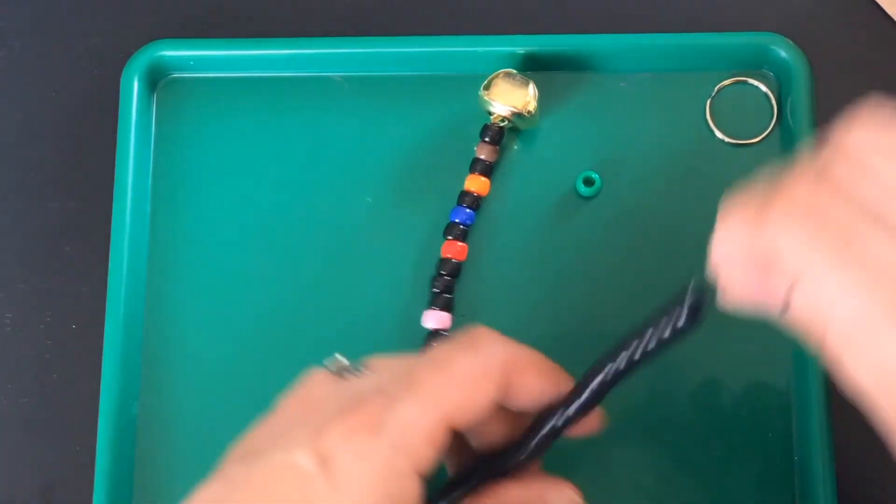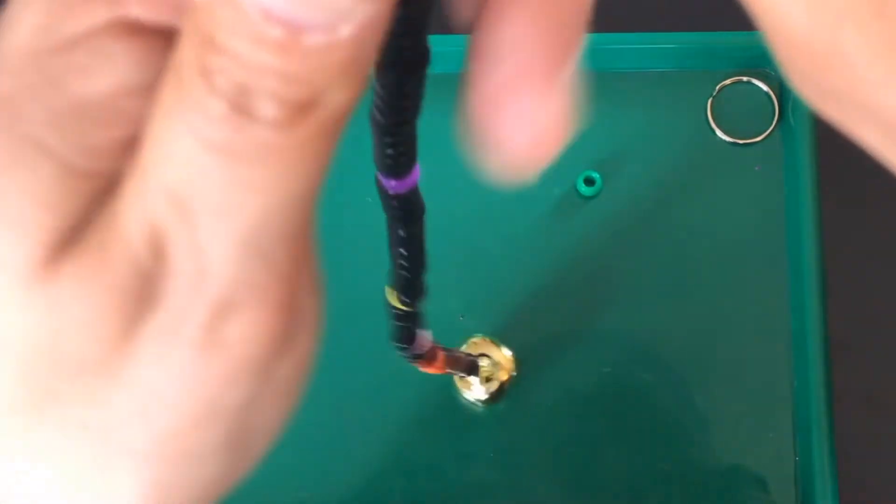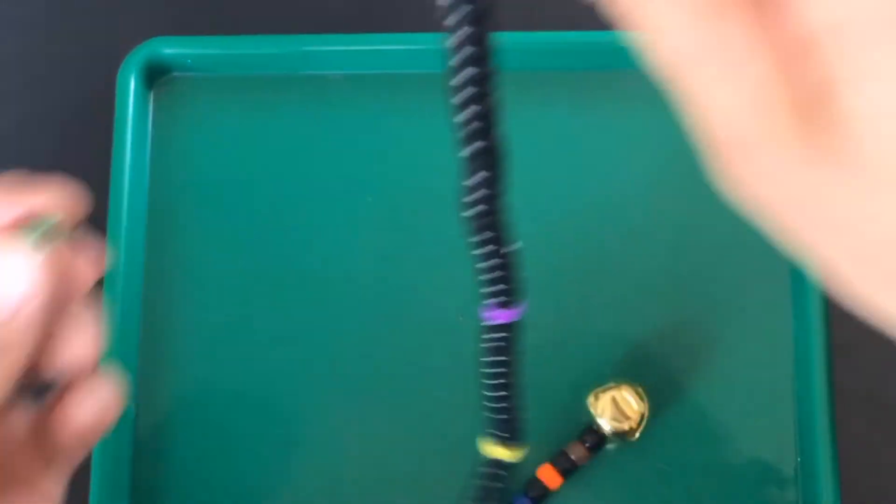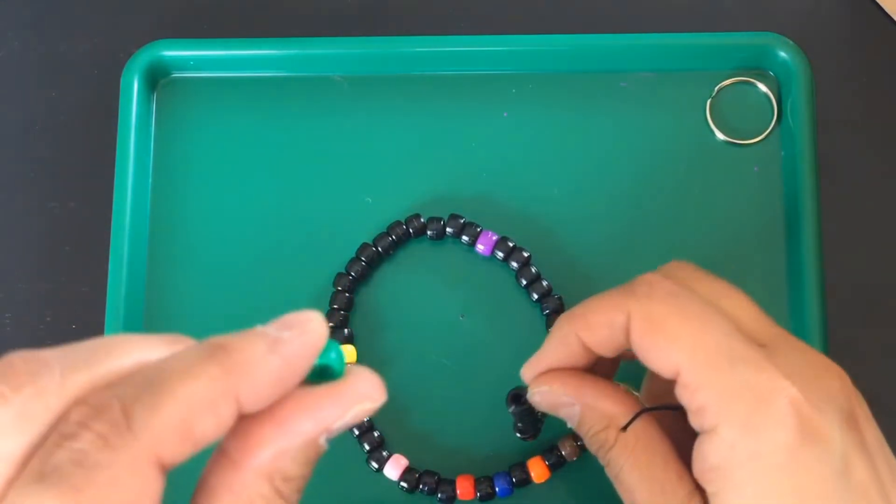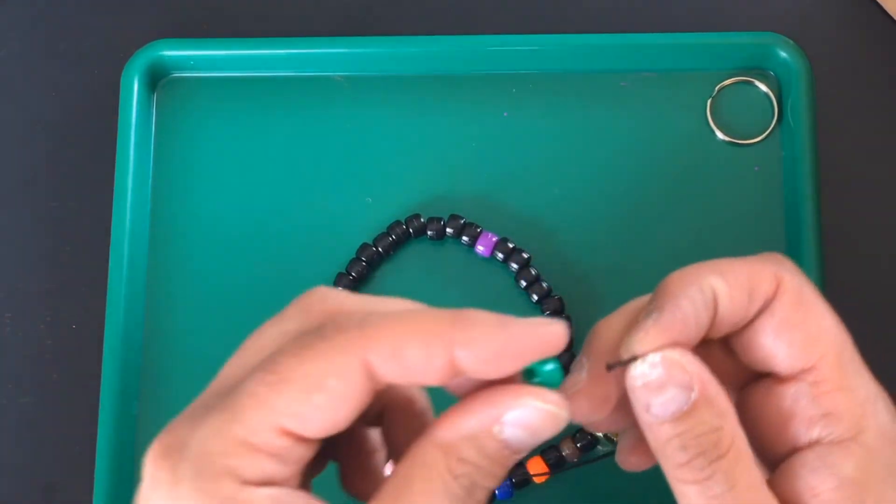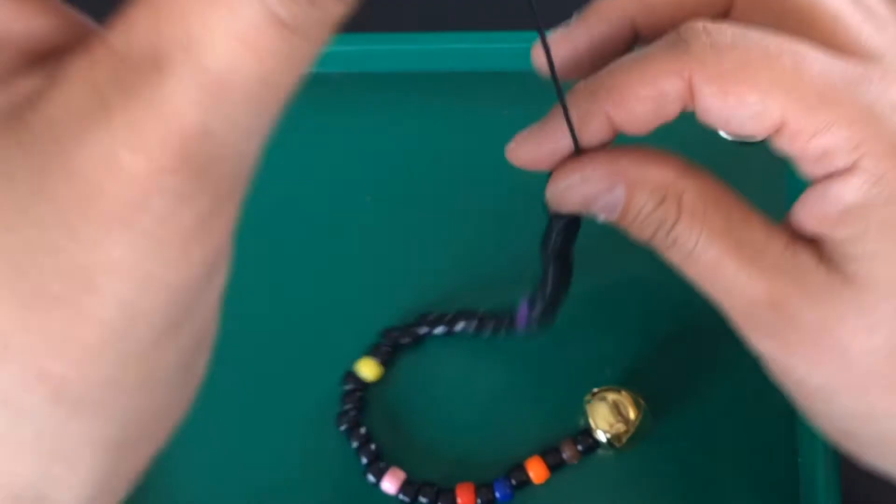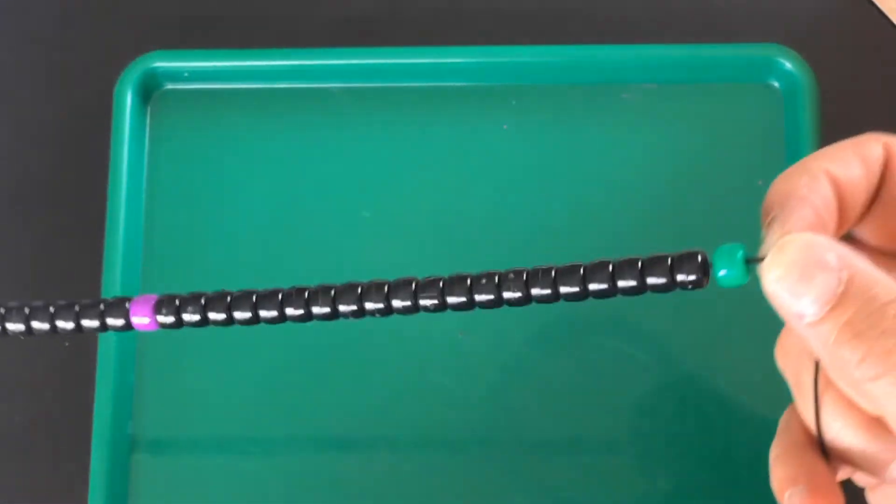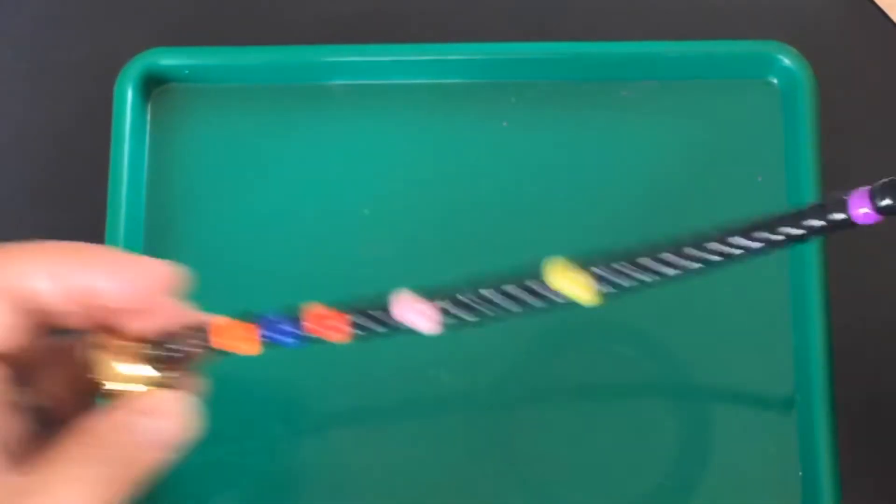Okay, that is number 20, that's my 20th bead on there. And then I am going to add my last bead, my last planet, which is Neptune. There you go. All right, so I have all of my planets on.